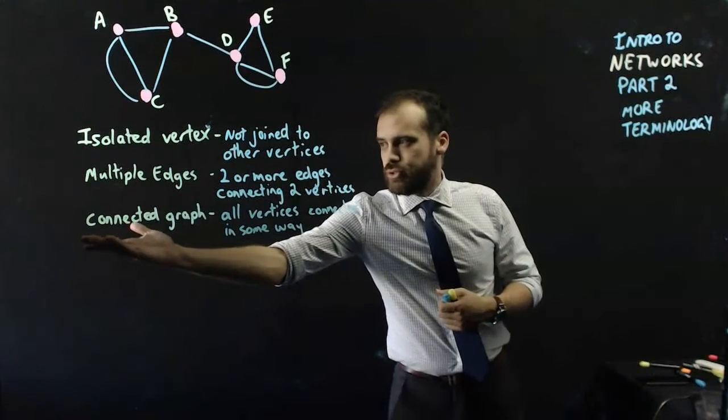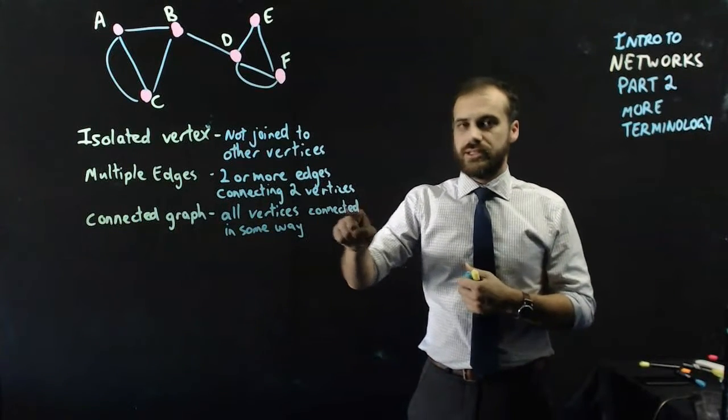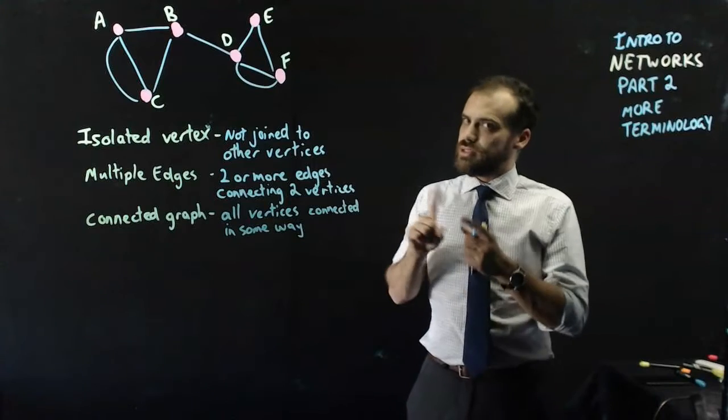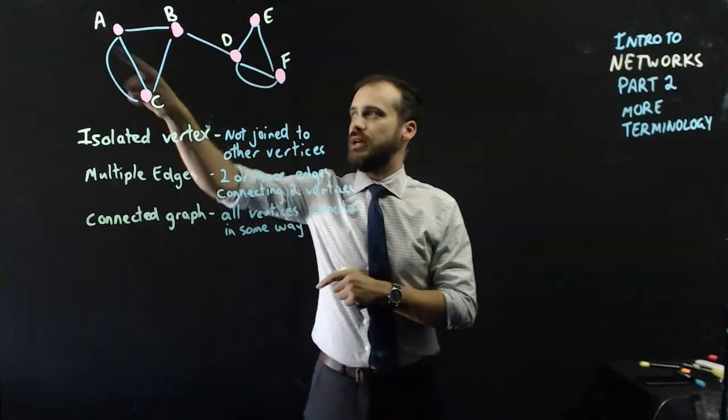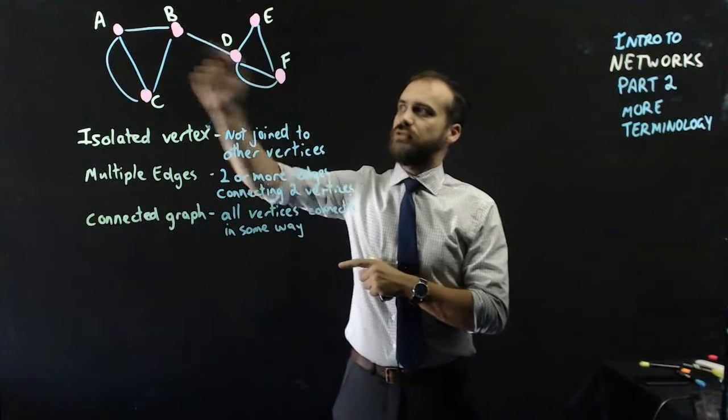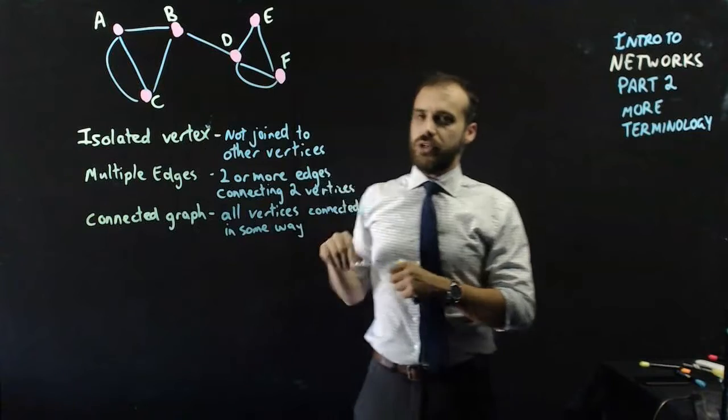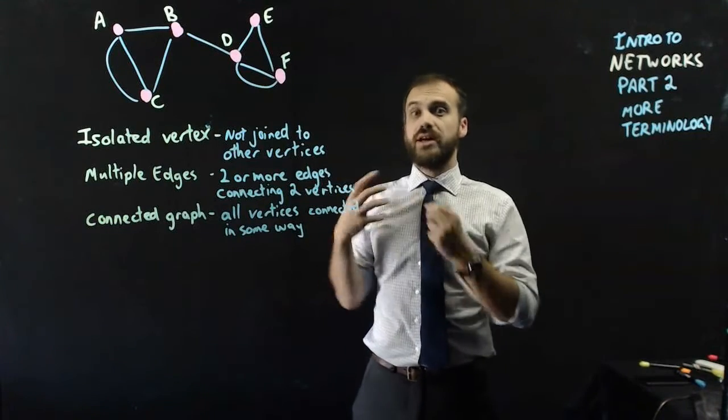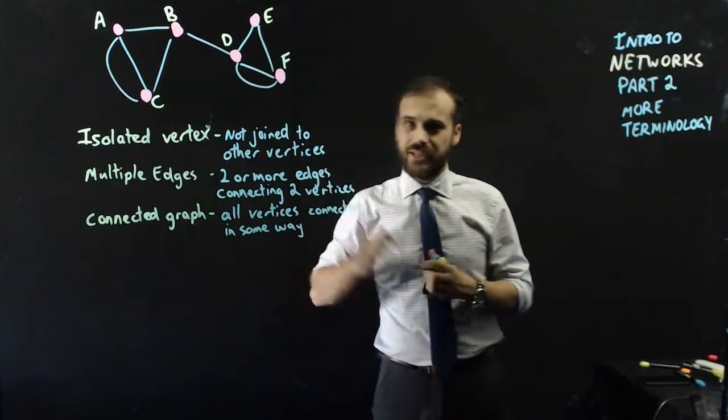And so now we have what's called a connected graph, and that means that all vertices are connected in some way. It doesn't mean that all vertices are connected to each other. You can see F is not connected to A directly, but you can drive from F to A by passing through D and B first. So they're all connected. In other words, we don't have any isolated vertices.